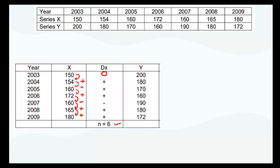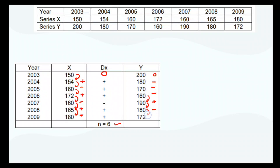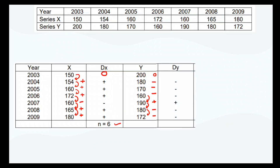Similarly, I compute dy for Y. From the first year I cannot do anything. For subsequent years, the deviation in Y is: minus, minus, minus, plus, minus, minus. So the deviation in Y gives the sequence: minus, minus, minus, plus, minus, minus.